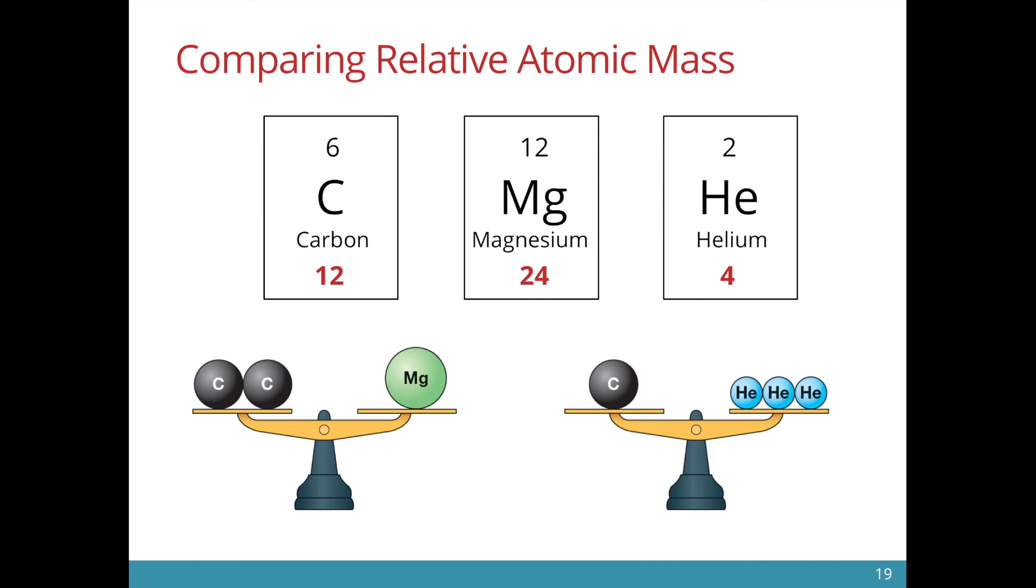Here are more examples. We have carbon, magnesium, and helium. So if you just focus on the bottom row, that is the relative atomic mass, we see that magnesium is 24 and carbon is 12.